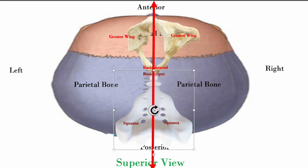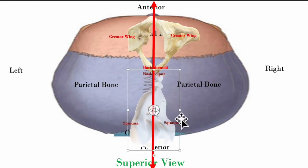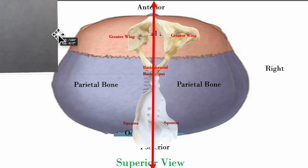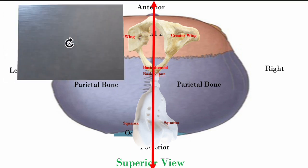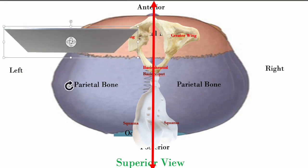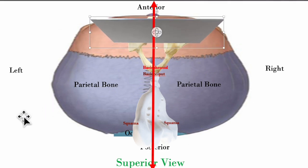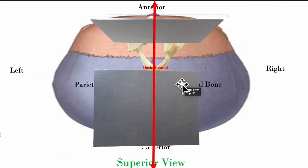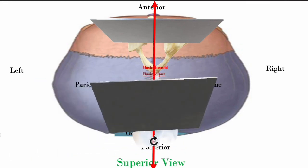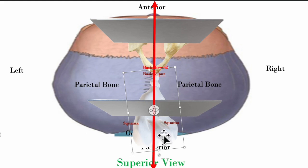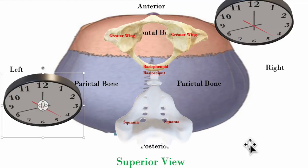So for a right torsion, the right greater wing moves superiorly and the right occipital squamous moves inferiorly. The plane involved is a frontal or coronal plane. The sphenoid has its own coronal plane and the occiput has its own coronal plane — these are the two frontal coronal planes in which the occiput and sphenoid side-bend. The key question is whether the sphenoid and occiput are moving in the same or opposite directions.